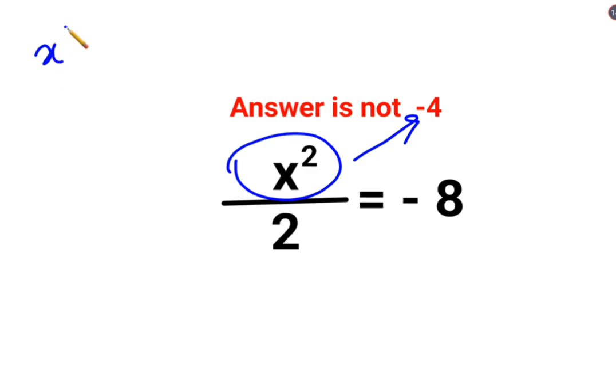See, we have x square divided by 2 equals to minus 8. In order to find the value of x, we will multiply both sides by 2. So this is cancelling. So we are left with x square equals to minus 16.